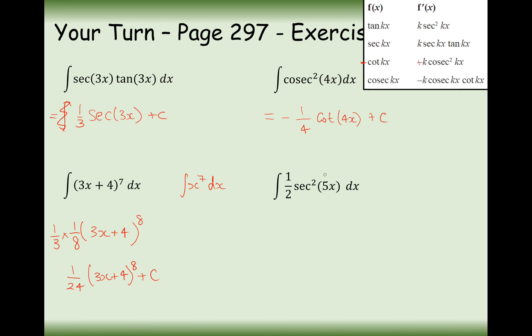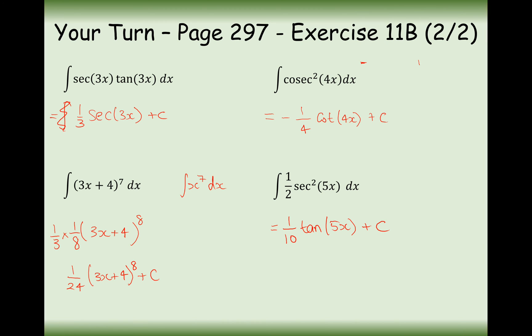For the last one, sec squared integrates to tan. We've already got a half at the front, but we're also going to need to divide by 5 at the front. So it's going to be 1 tenth tan(5x). That's the answer to this set of questions. Have a go at plenty of questions from exercise 11b — it's not much harder than the previous section. All you're doing is dividing by the number that's multiplying x at the front, and if you've got a number just being added on as extra, just ignore it. Thanks very much for watching.